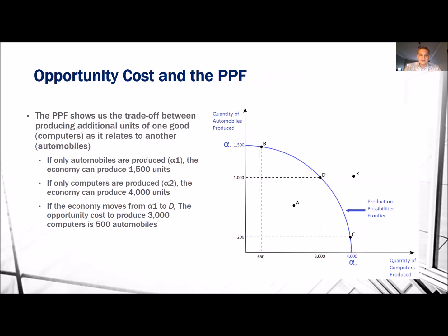If only automobiles are produced, we are here at Alpha 1, so we can produce 1,500 automobiles but zero computers. If we are producing at Alpha 2, that's 4,000 computers and zero automobiles. If the economy moves from Alpha 1 to D, the opportunity cost to produce 3,000 computers is 500 automobiles.